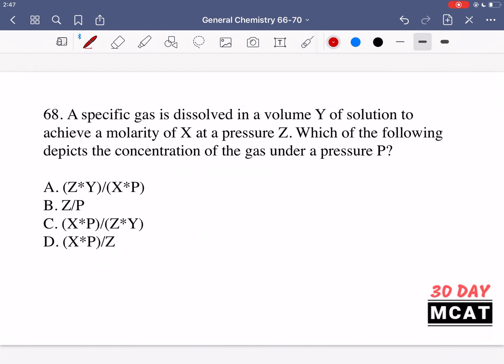In question 68, it says a specific gas is dissolved in a volume Y of a solution to achieve a molarity of X at a pressure Z. Which of the following depicts the concentration of the gas under a pressure P? So we have a gas, and it's dissolved. Here's our volume, molarity initially, and then pressure Z. So at initial conditions, it's at volume Y, molarity X, so that's the concentration, and pressure Z. And then we change something, so we have a new pressure P, and we're asked for this new concentration.